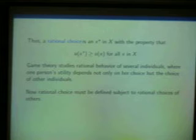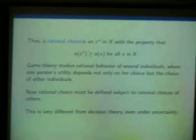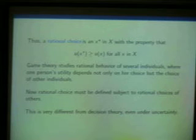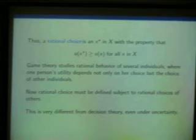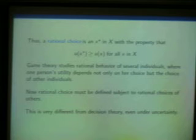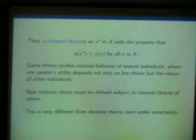Rational behavior must be defined subject to the rational choices of others. This idea of rational behavior by one individual who is affected by the choices of other rational individuals is not the same as the decision-theoretic problem, nor is it the same as decision theory under uncertainty. It's very different from the payoff depending on the state of nature — more importantly, the payoff depends on the actions of other rational individuals who have a similar self-interest.